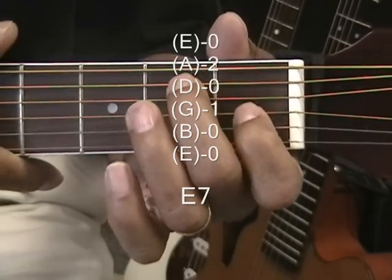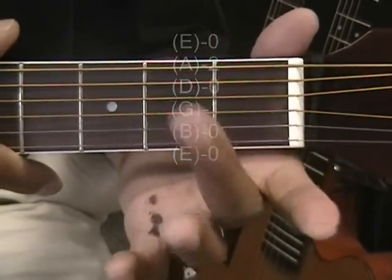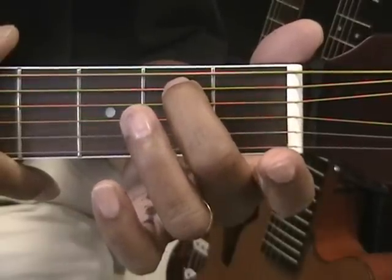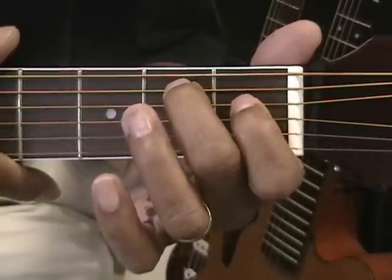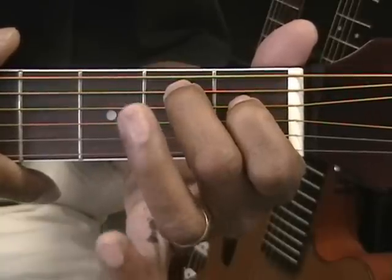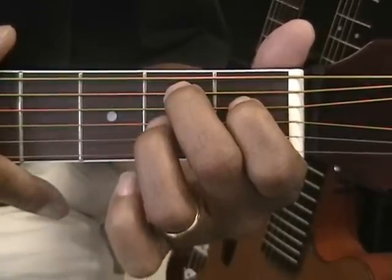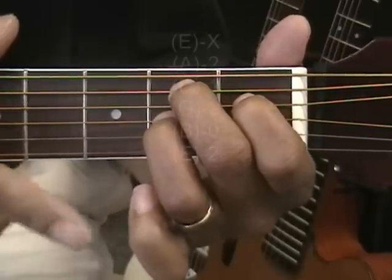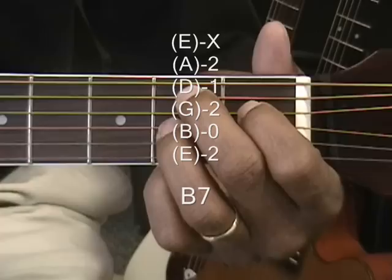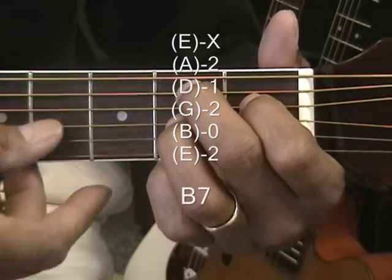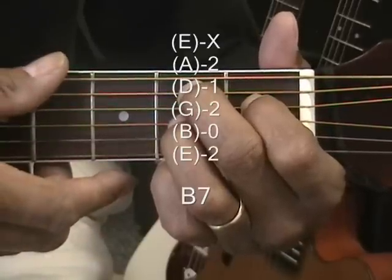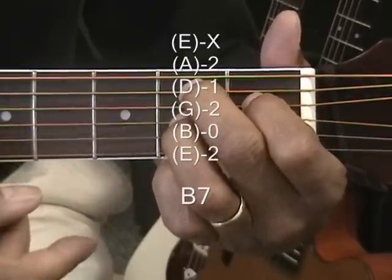We're going to play B7 by placing the middle finger on the A string at the second fret, the first finger on the D string at the first fret, the ring finger on the G string second fret, and the pinky on the high E string second fret. We're going to strum that from the A string. We're not going to use the low E string for that one.